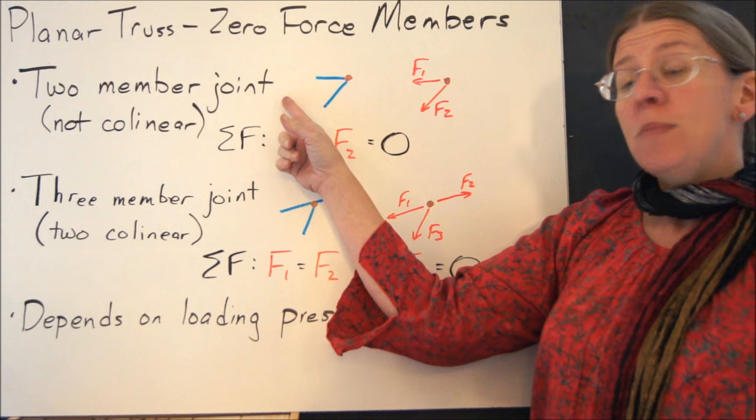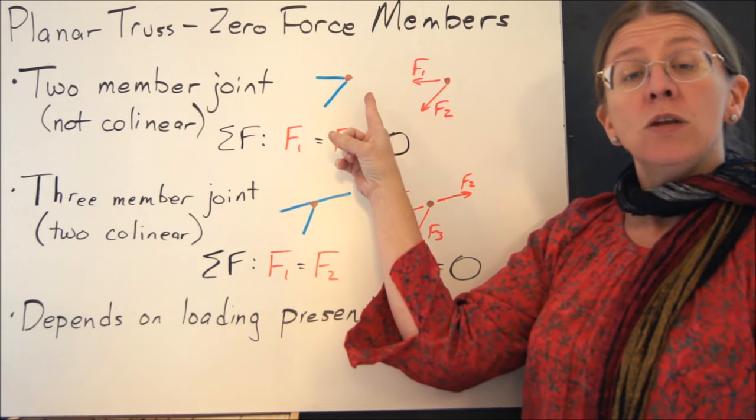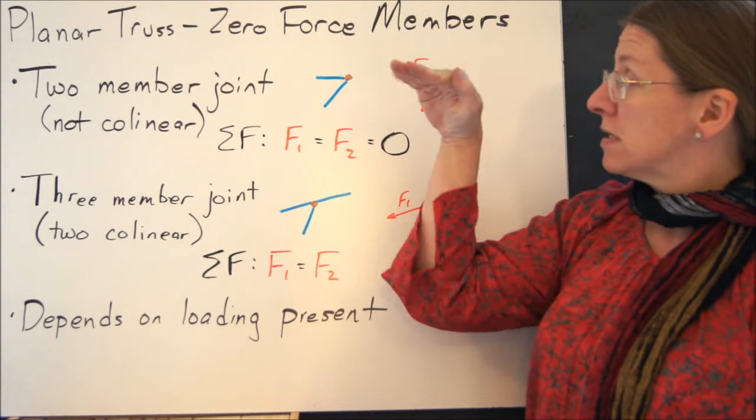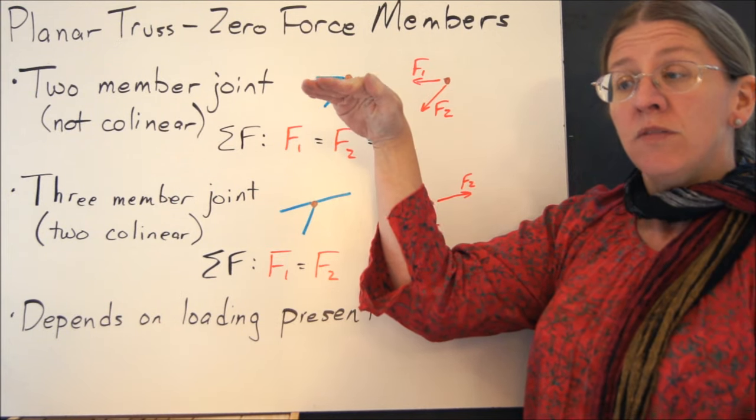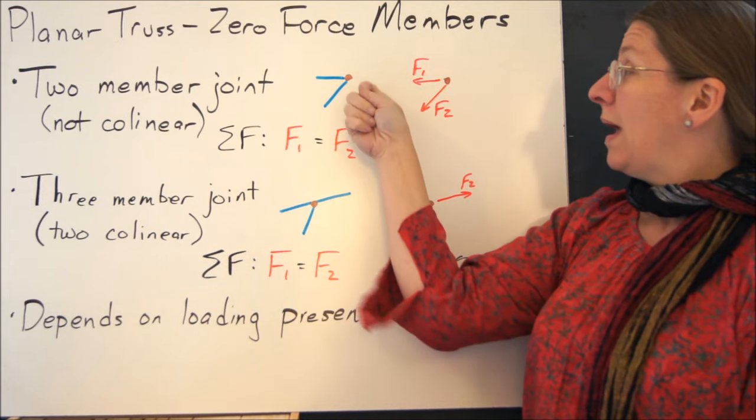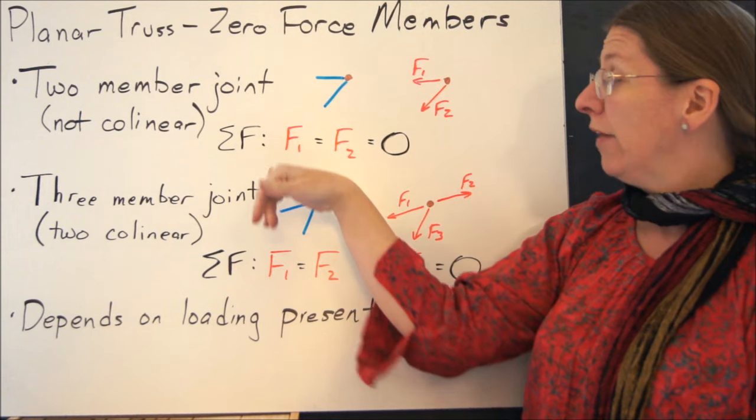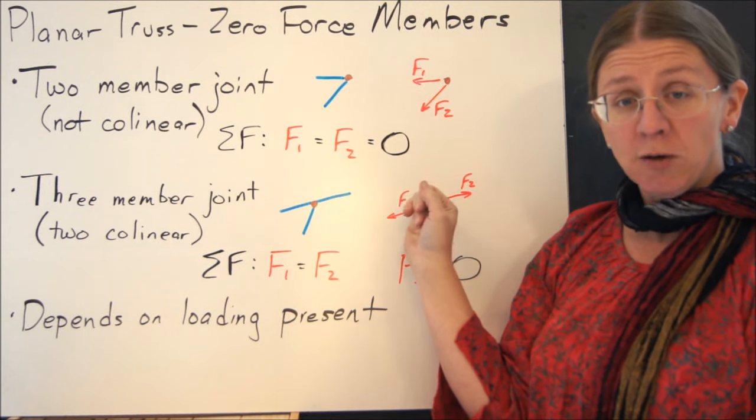If you have only two members that come into a joint, like this, and they're not lined up, then what you can say is if I summed the forces along one of them, then the other one is not along that one, because it's not collinear, and it must be zero. So at this point, what you can say is by summing the forces along one and then along the other, they have to both, in fact, be zero.